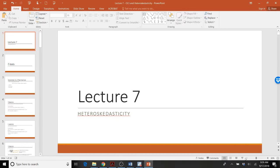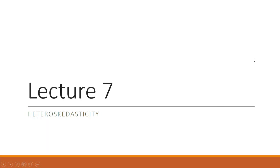Hello everyone. This is Dr. Gallenstein, and today we are doing lecture number seven. In lecture number seven, we're going to continue our series in which we are talking about the assumptions of the ordinary least squares approach to estimating regression coefficients and the various issues that can arise when some of those assumptions do not hold. Today will be the last lecture in that series, and we're going to talk about a problem called heteroscedasticity.